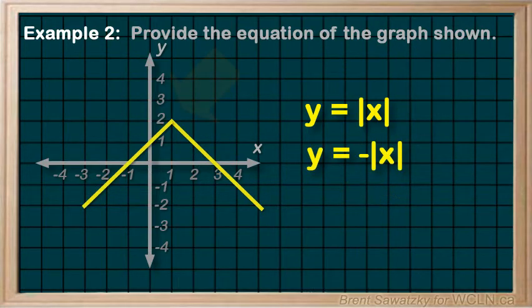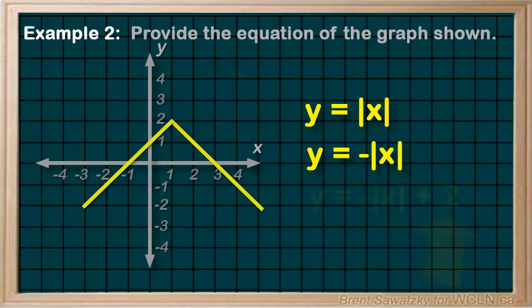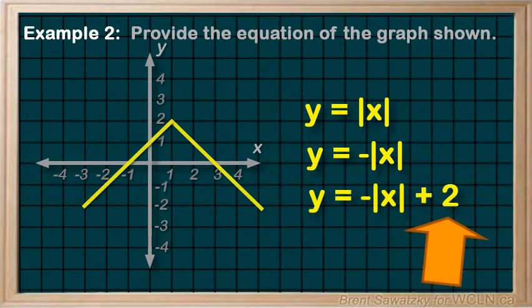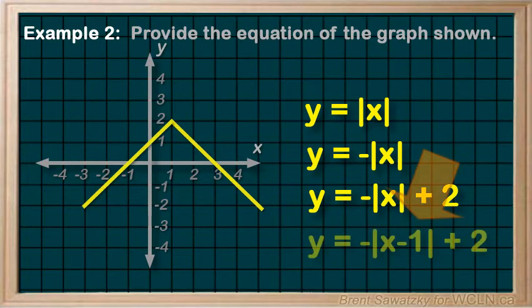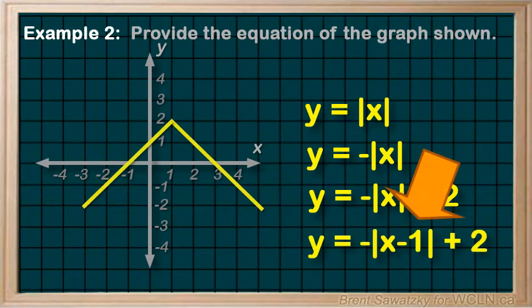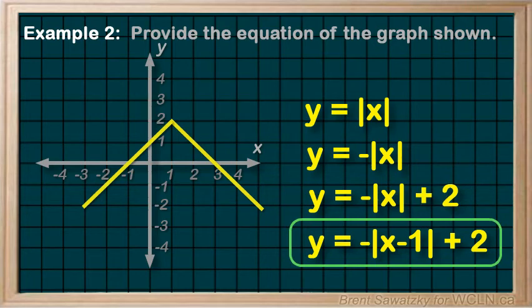Next, we see that the vertex is not on the origin but is shifted up by 2. So let's add a plus 2 to the end of the equation. Finally, we note that it's shifted horizontally by 1 to the right. Thus, we need to add a negative 1 in here with the x. And we're done. We have our equation.